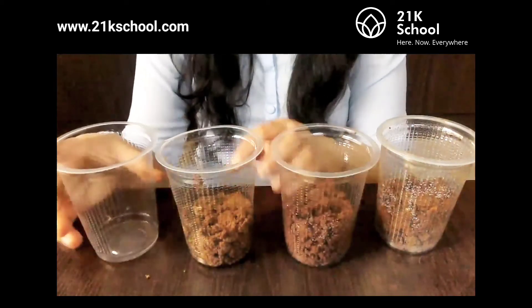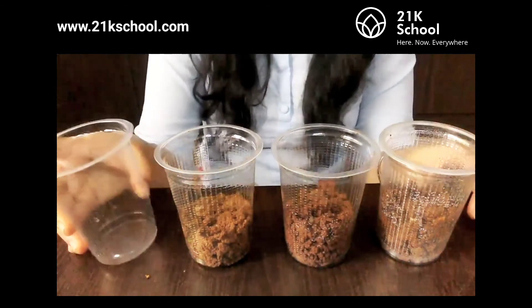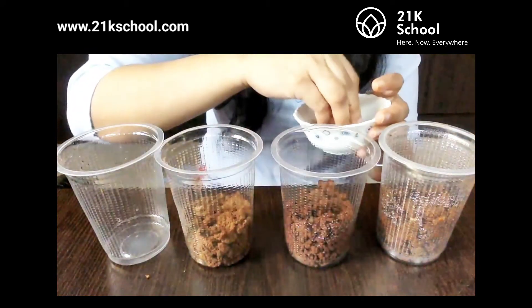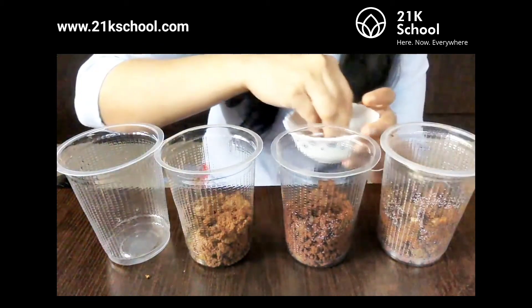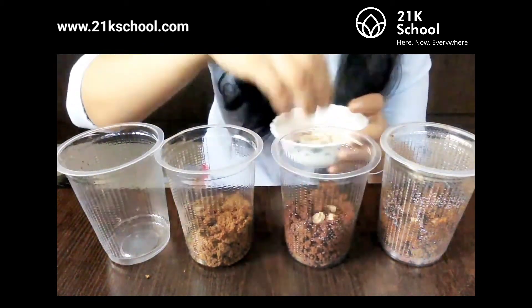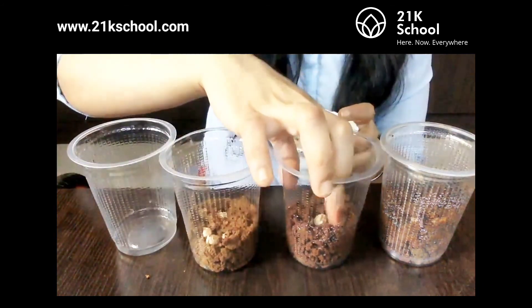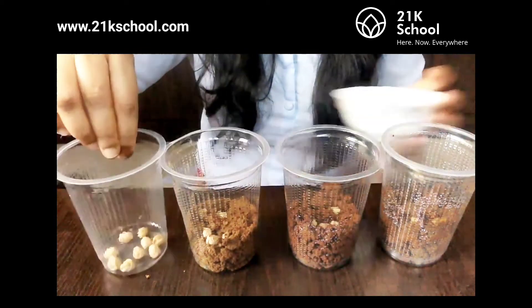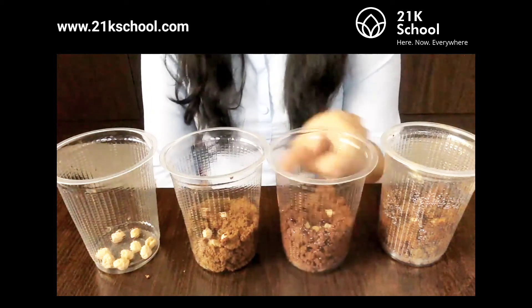Now that you know what germination is and how a plant grows from a seed, let's demonstrate the same. Here I have four sets of pots — glasses with soil in each, and the last one is empty. I have some chana, and we will start sowing it. Just give a little press so it goes inside the soil, do the same for all pots, then cover the seeds well with soil. In the last glass, just put some chana without soil.